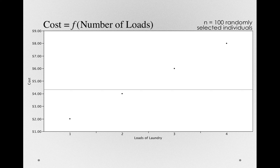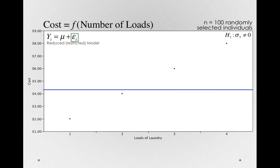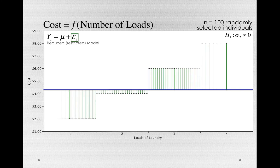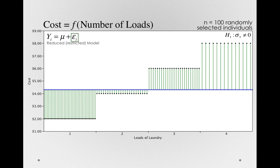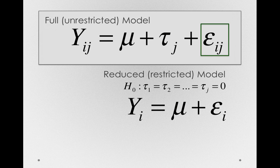There actually is no error in this model, because we can perfectly predict the cost that somebody will spend. So this is a situation where H1 is definitely true — the variance of the treatment offsets is definitely different from zero. But if we were using a reduced or restricted model, we would take the deviations for every individual to the grand mean, and those would be the green offsets. We measured 100 randomly selected individuals who each paid the identical amount within their group because there is no error. And yet what's masquerading as error here is the treatment differences. All of these are actually treatment offsets masquerading as error if we're fitting a model without using loads of laundry. So that epsilon term from the full unrestricted model is uncontaminated by the treatment offsets if they're actually there.